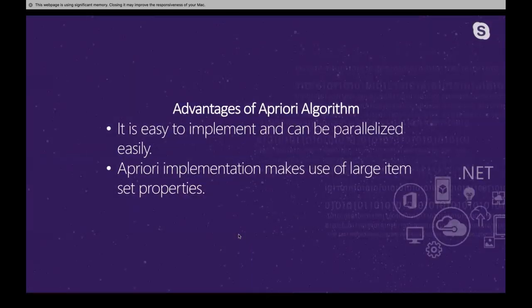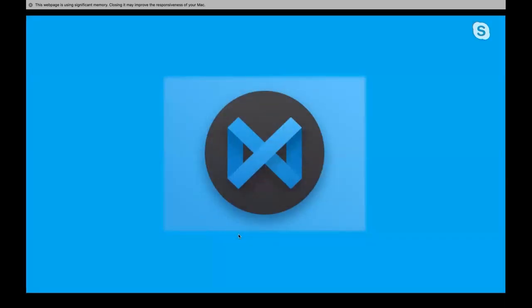What are the advantages of the Apriori algorithm? It is easy to implement and can be parallelized easily. The Apriori implementation makes use of large item set properties. When using the Apriori algorithm in an e-commerce site, we can easily implement it and it can be parallelized easily rather than other machine learning algorithms, and it is perfect for association rule-based machine learning models.